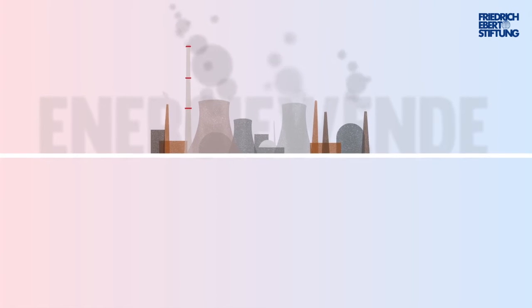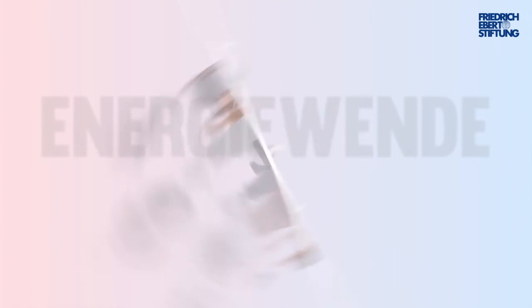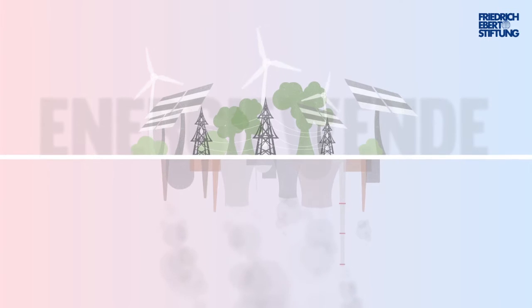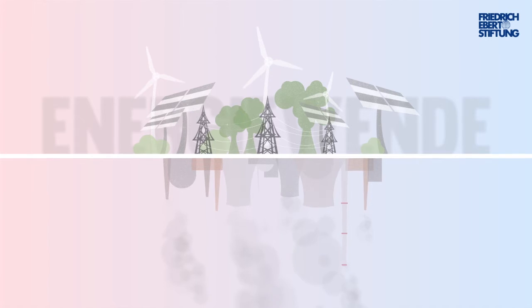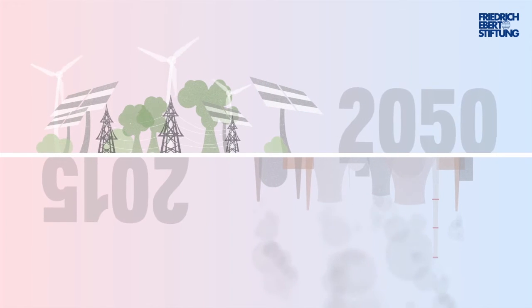Currently, the energy supply in Germany is based on fossil fuels, but these are gradually being replaced by renewable energy sources. The process accompanying this change is the Energiewende, and it is in full swing. To be more specific,